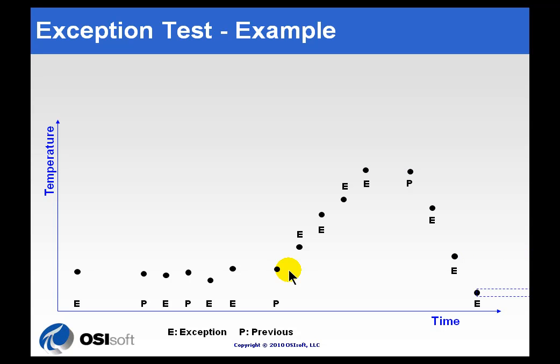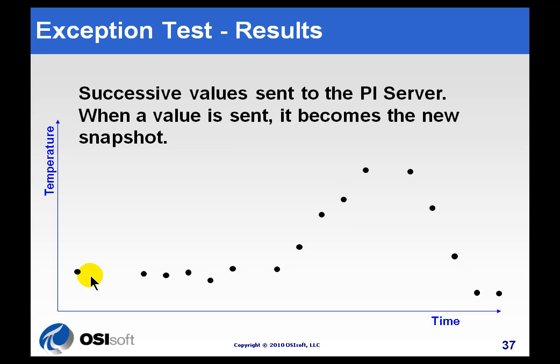This is the end result. When those values are passed through the exception test, they are sent to the PI Server as what we call the snapshot. Just a note: not all interfaces support this exception test — you're going to have to check your interface documentation. The vast majority do support the exception test, but as mentioned before, it can be turned off if you prefer.